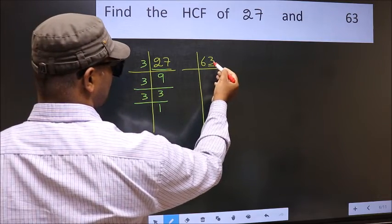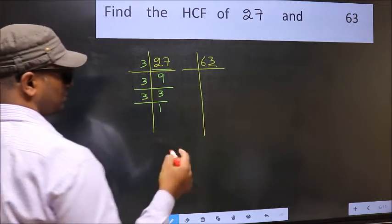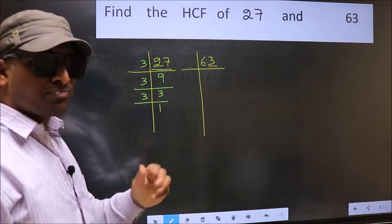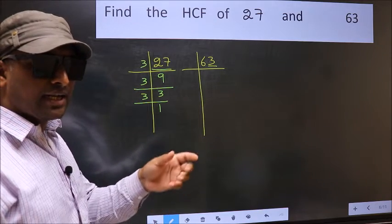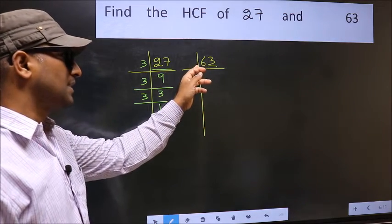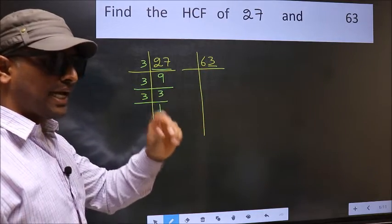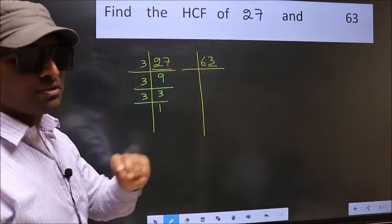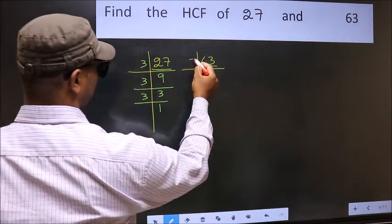For 63, the last digit is 3, not even, so not divisible by 2. The next prime number is 3. To check divisibility by 3, add the digits: 6 plus 3 equals 9, and 9 is divisible by 3. So this number is also divisible by 3.